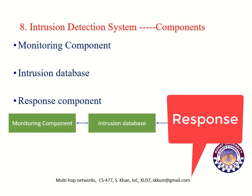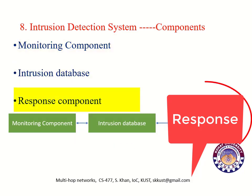Intrusion detection system components. There are three important components: number one, monitoring component; number two, intrusion database; number three, response component. The monitoring component is used for local events as well as neighbor events monitoring. The intrusion database contains records of recent misbehaviors as well as reputation values of neighbor nodes. The response component is used to respond in case intrusion is detected — the response may be to raise an alarm, alert the administrator, or broadcast information to neighbor nodes about the misbehaving node.